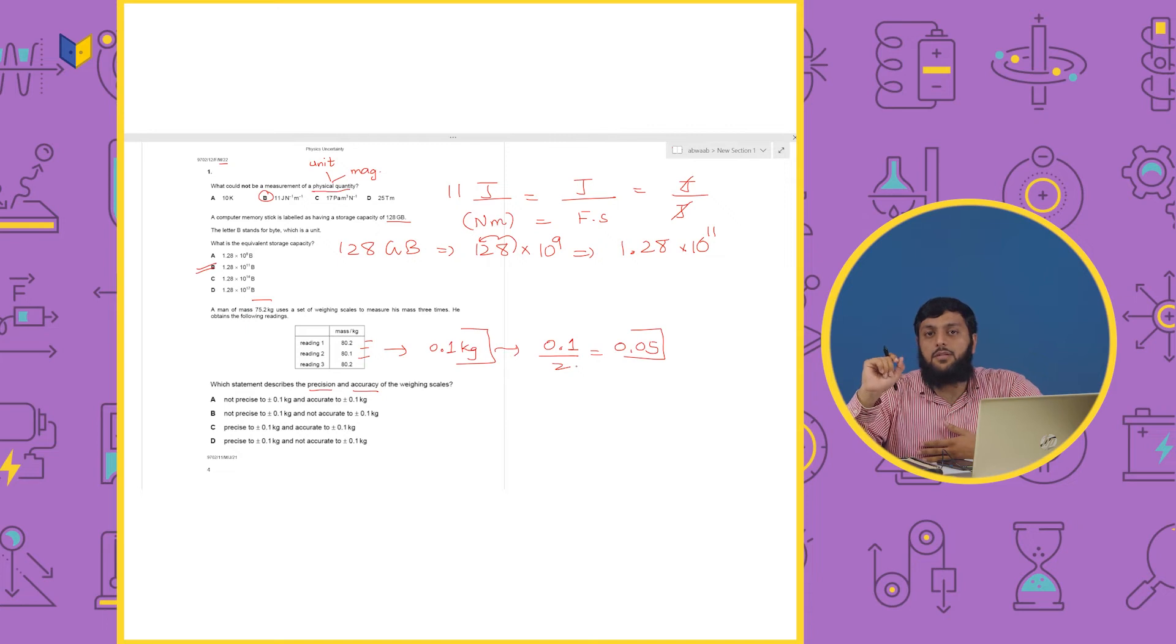But, in the reading, we count the smallest count in the reading. Because the reading will start and end. So, if we look at this, this is not accurate to 0.1. So, I will go with option D.